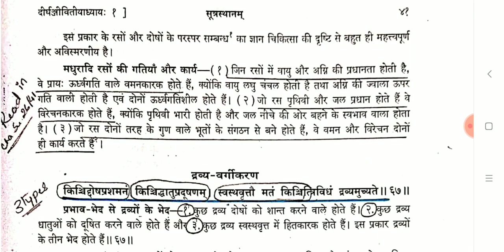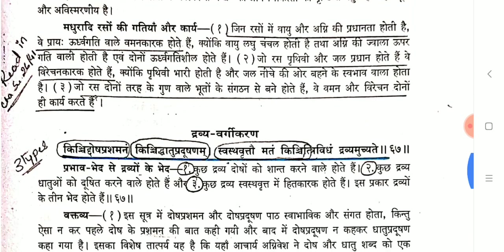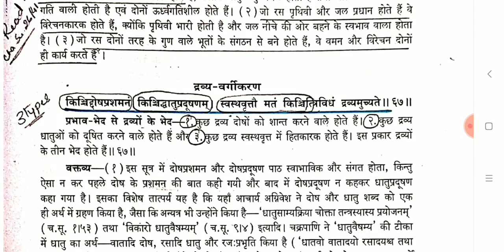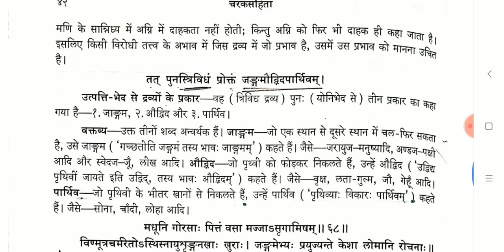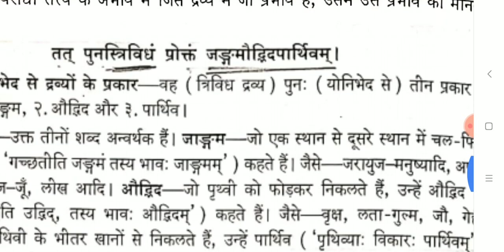Next, Dravya Vargikarna — three types are there. What are the three types? First, Kinchit dosha prashamanam; second, Kinchit dhatu pradushanam; third, Svasthavrittau matam kinchit etam. These are the three. Also, 'Tat punar trividham' — there are also three types: Jangama, Audbhida and Parthiva. Don't get confused — in both Shlokas there are trividha classifications. A question may ask about Charaka's Trividha dravyah and include both classifications as options, with 'both A and B' being the correct answer.